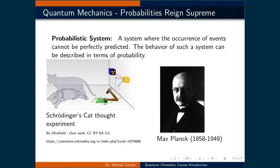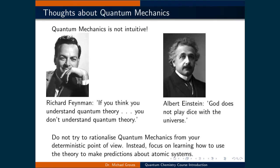Now the Schrödinger's cat experiment was designed to demonstrate the absurdity of applying quantum mechanics to everyday objects. Even though many classical mechanical principles can be derived from quantum mechanics, paradoxes like the cat being both alive and dead until it is observed troubled many of the founders of the theory. By outlining all of these quantum mechanical principles and examples, we've hopefully demonstrated that quantum mechanics is not intuitive. Don't try to rationalize quantum mechanics from your deterministic point of view. Instead, focus on learning how to use the theory to make predictions about atomic systems.